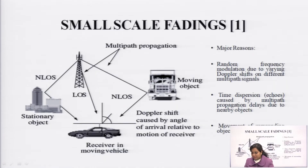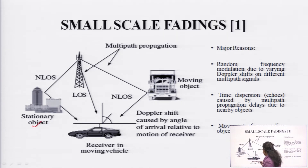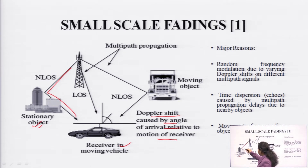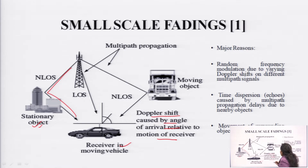Next is small scale fading. In this case, you can see a stationary object and a receiver in a moving vehicle. This is the Doppler shift caused by the angle of arrival relative to the motion of the receiver. Since there is no direct line of sight, this is a non-LOS path — it has been impinged on a building. This is also a non-line-of-sight path because there is a moving object. When the receiver is moving, there exists a Doppler shift.